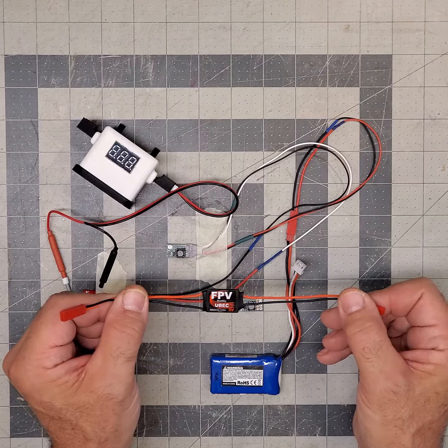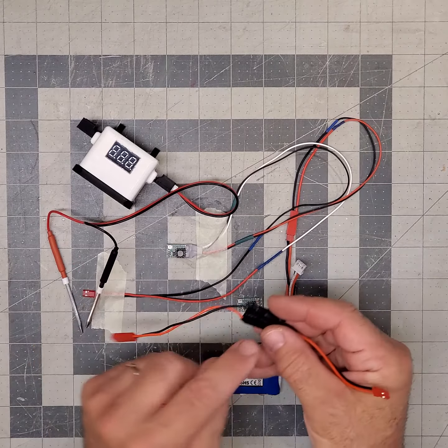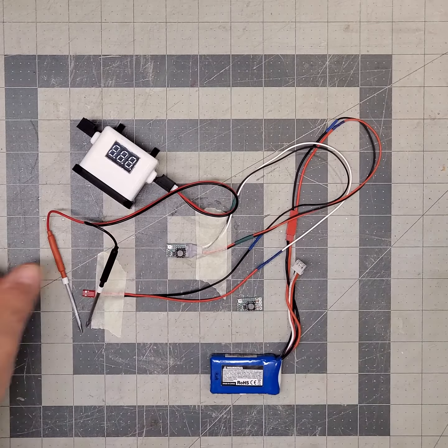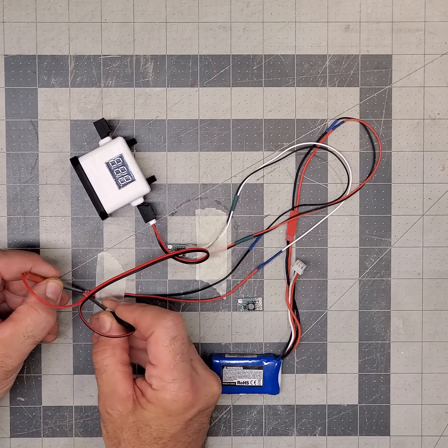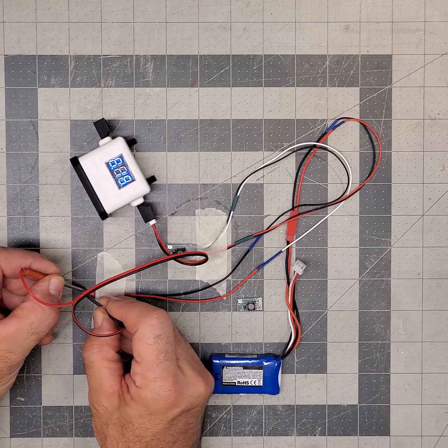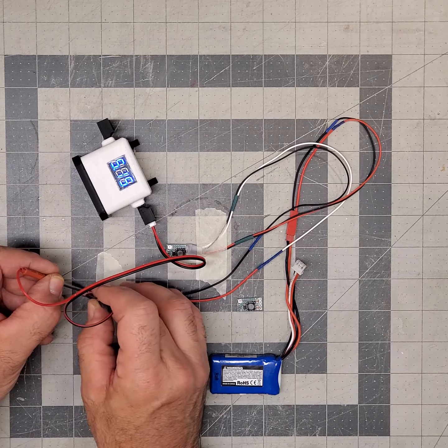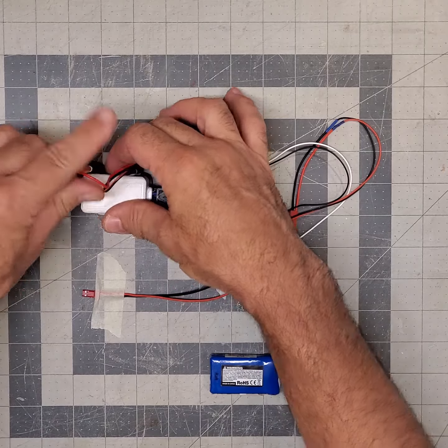But once you open these babies up, they're basically that, only smaller. Look how much smaller that is. It's fantastic. Anyway, check this out. 5.5 volts. I adjusted that with that little bitty pot on there, and that's what I got.